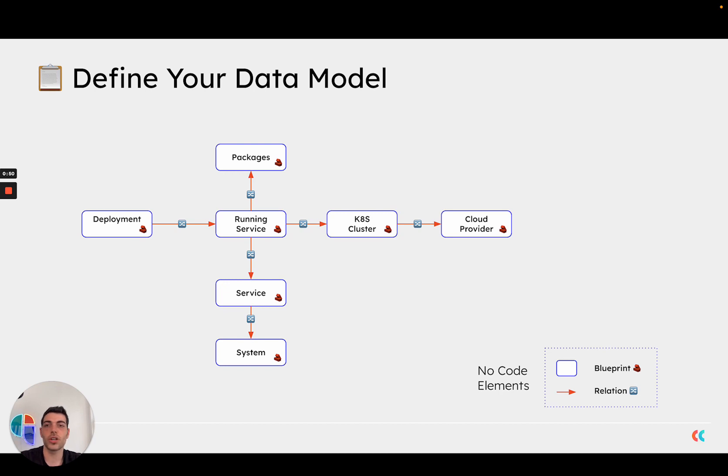A relation allows you to actually create a dependency graph between your different assets. Then, you can answer some complex questions. For example, where is my service deployed? Which packages is it using? Which Kubernetes cluster is it deployed on? So on and so forth.